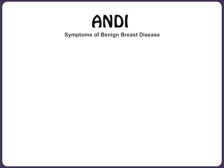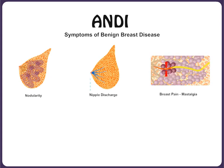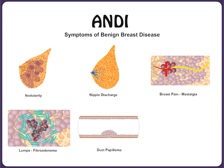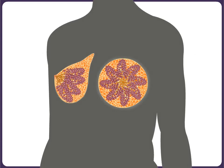It is thought that nodularity of the breast, nipple discharge, nostalgia, small lumps in the breast like fibroadenoma, duct papilloma, and breast cysts can all be explained with this pathophysiological concept of ANDI. We shall explain this concept through some anatomical facts.